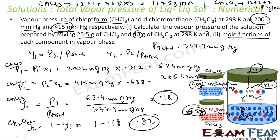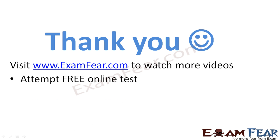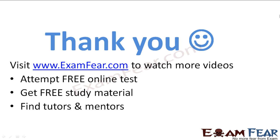So we found all the values: P1 = 62.4 mmHg, P2 = 285.5 mmHg, P_total = 347.9 mmHg, y1 = 0.18, y2 = 0.82. The concept is straightforward: use the pure component vapor pressures, find the liquid-phase mole fractions, apply Raoult's Law to get partial pressures, then divide by total pressure to get vapor-phase mole fractions. Thank you — visit examfia.com for more videos and free online tests.